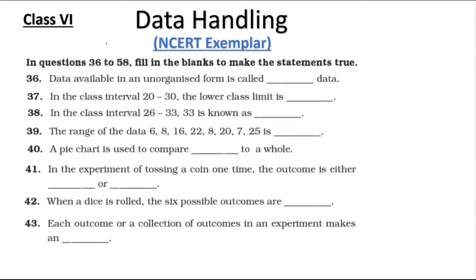Question 36: Data available in an unorganized form is called raw data. Question 37: In the class interval 20 to 30, the lower limit is 20. Question 38: In the class interval 26 to 33, 33 is known as the upper limit.